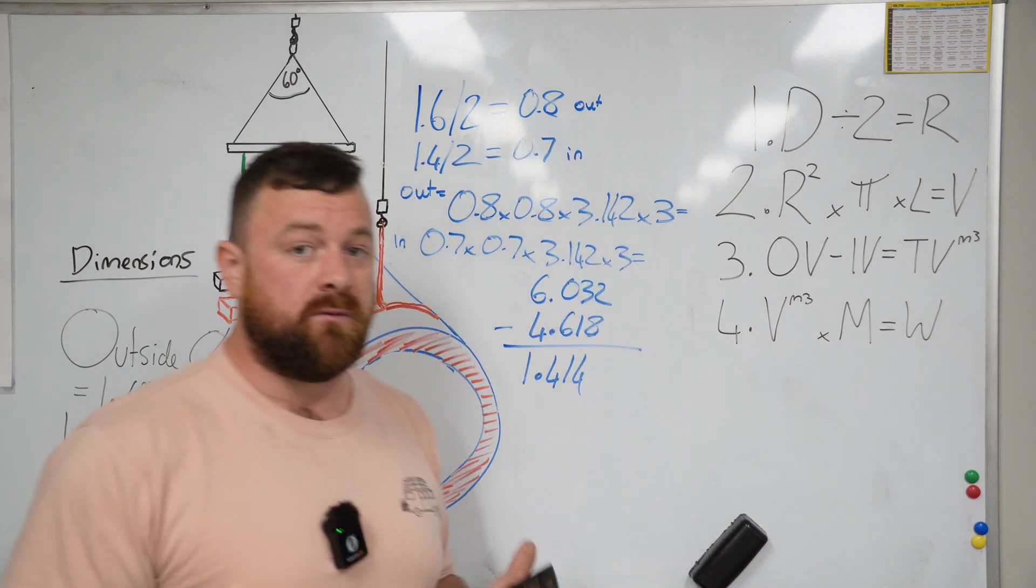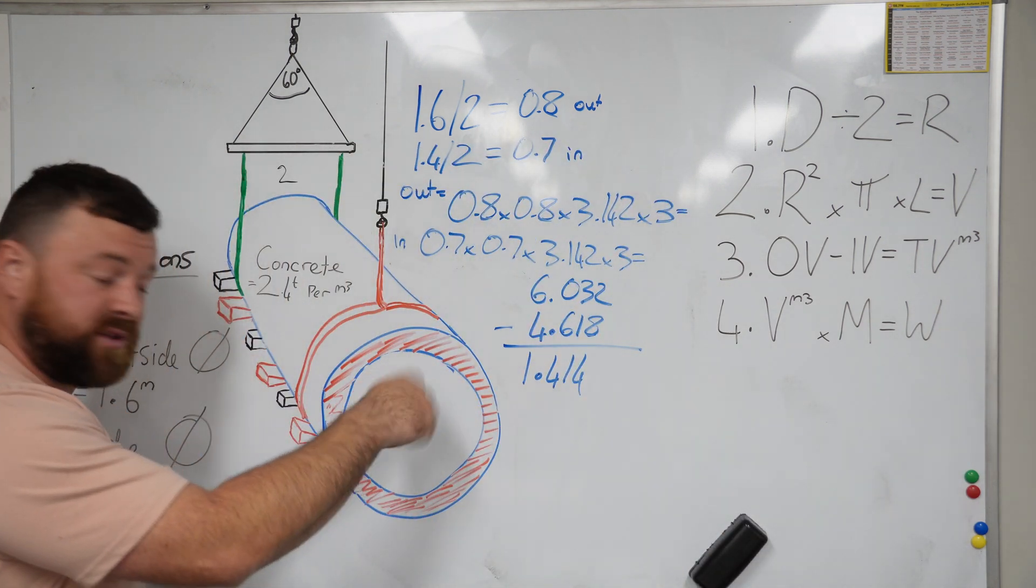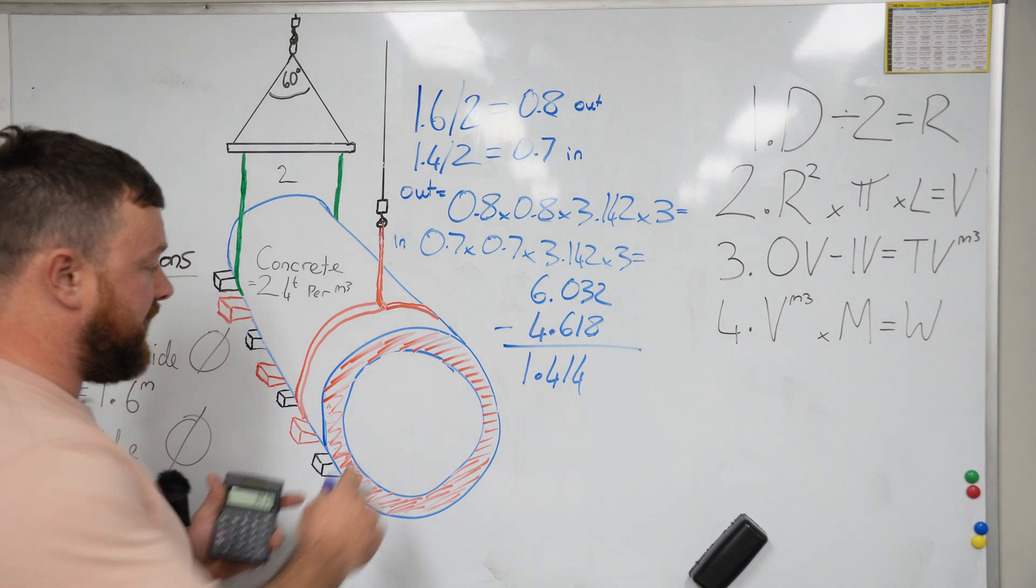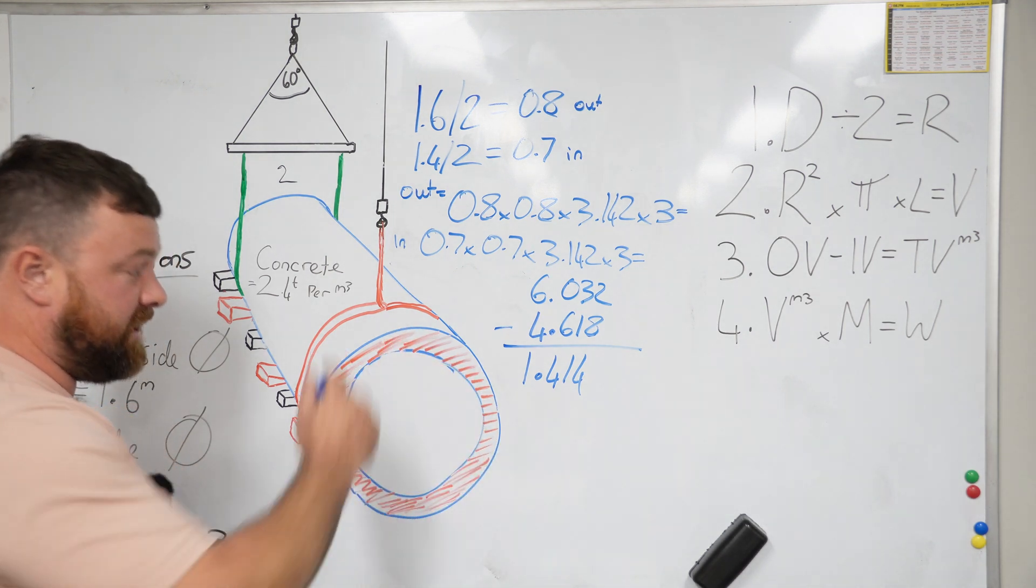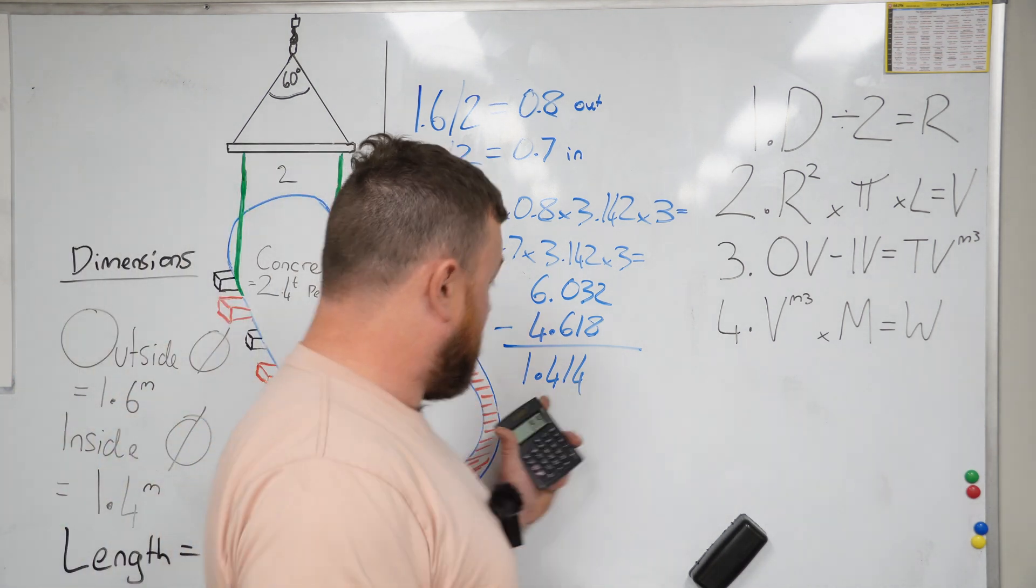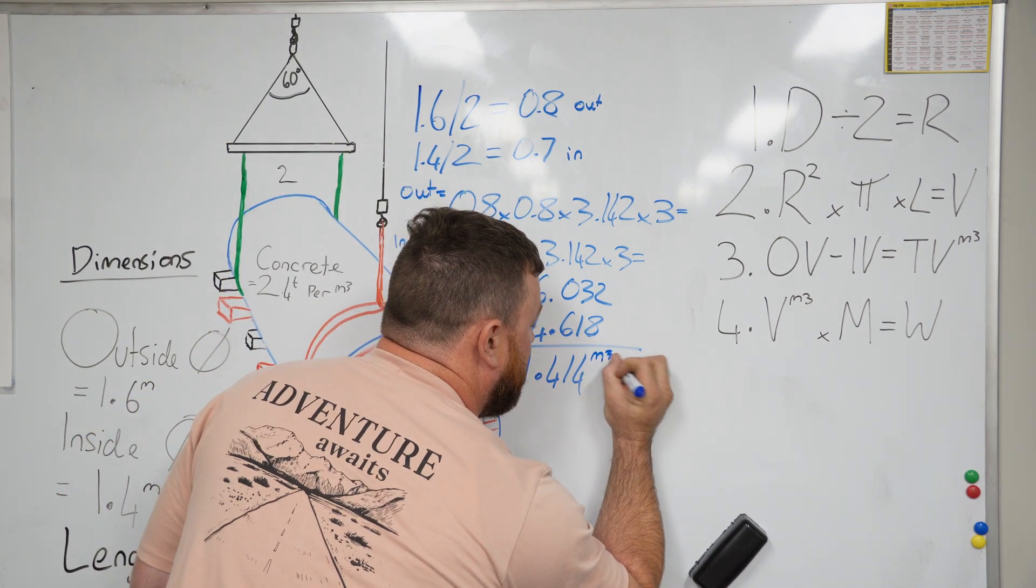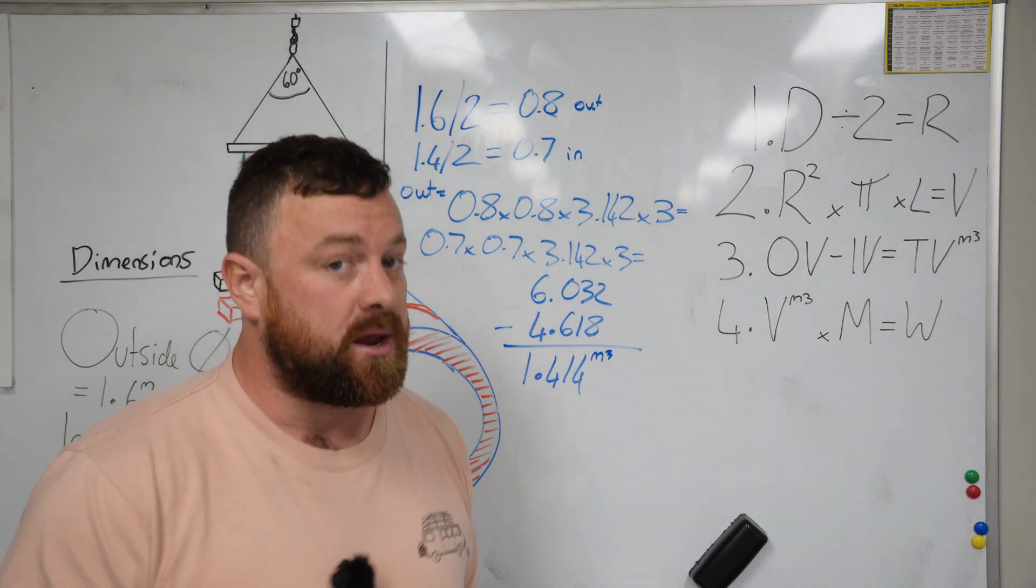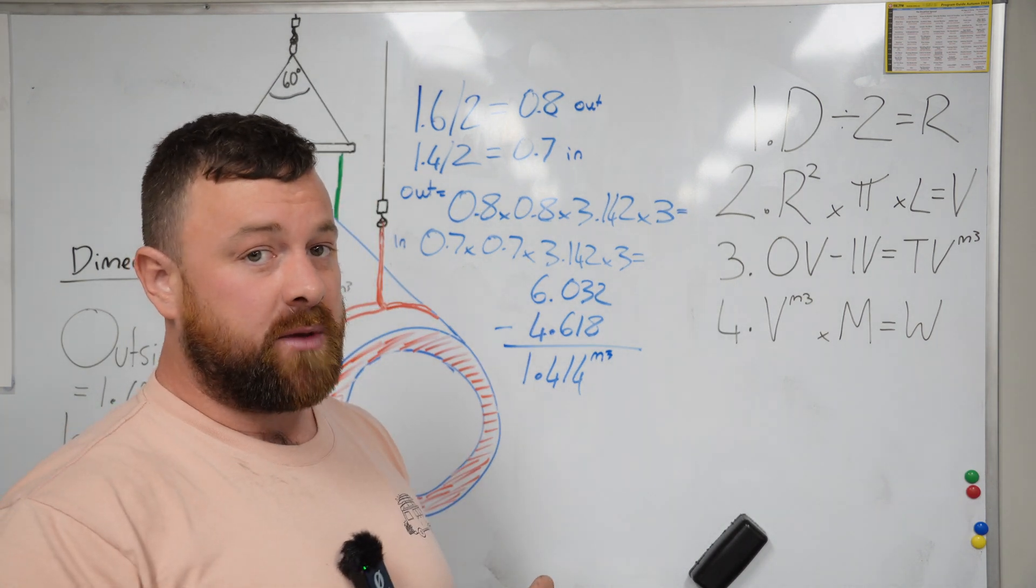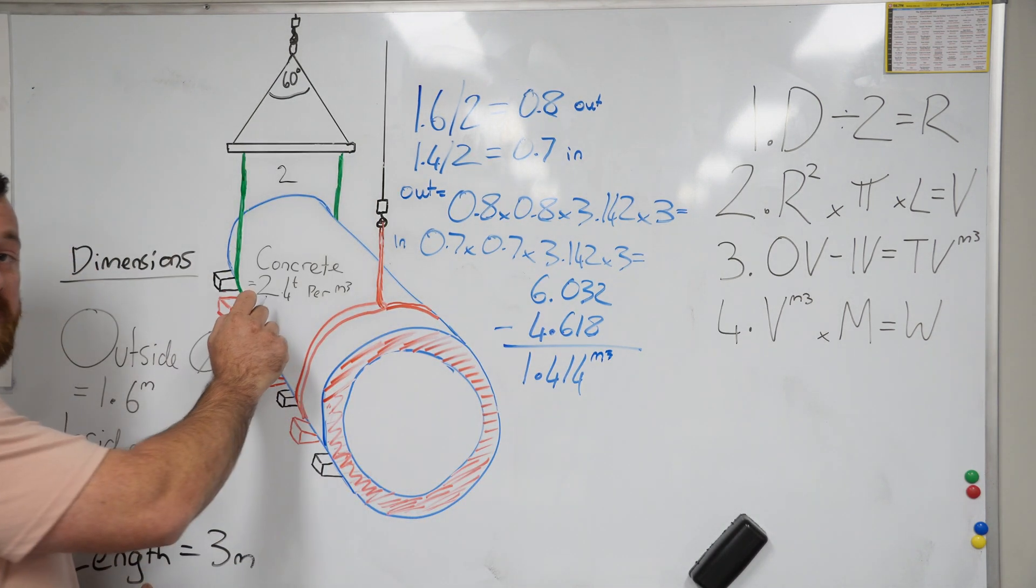We've just completed the third part of our formula, which has given us our total volume. So remember, there's all this air in the middle of the pipe. We want to find out what our total volume is here. Our total volume, which is measured in cubic meters, is 1.414 cubic meters of concrete. Now, how much does a single cubic meter of concrete weigh? 2.4 tons.